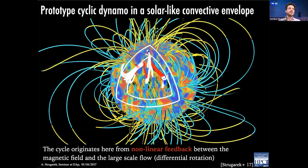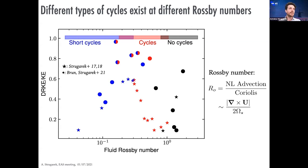We reproduced this study with a different technique and now have a good understanding as a function of Rossby number. At low Rossby number we observe in the models short cycles of about a year period. At intermediate Rossby number — the solar-like regime — we see long decadal cycles resembling the solar cycle. At high Rossby number the symbols become black because we lose magnetic cycles completely. I must insist: we still have very strong large-scale magnetic fields, they just do not oscillate anymore in time.